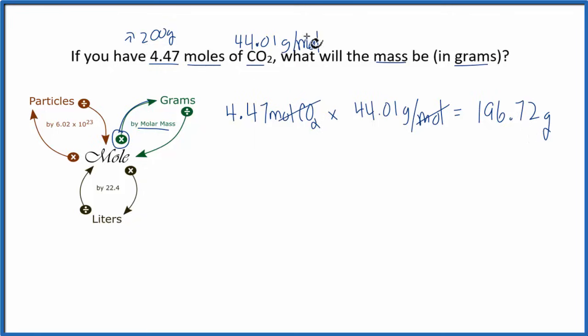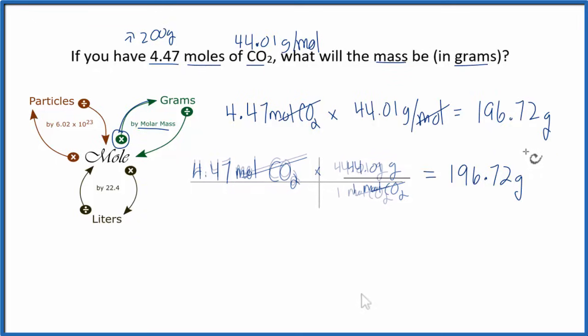We can also set it up using the molar mass as a conversion factor. I'm looking for grams, so that's the desired quantity. Grams goes on top. I'm given moles of CO2, and one mole of CO2 is 44.01 grams. Multiply the top, divide by the bottom. I get the same answer. Moles, they cancel out. I'm left with grams. You could also look at it like this. Either way, same answer.